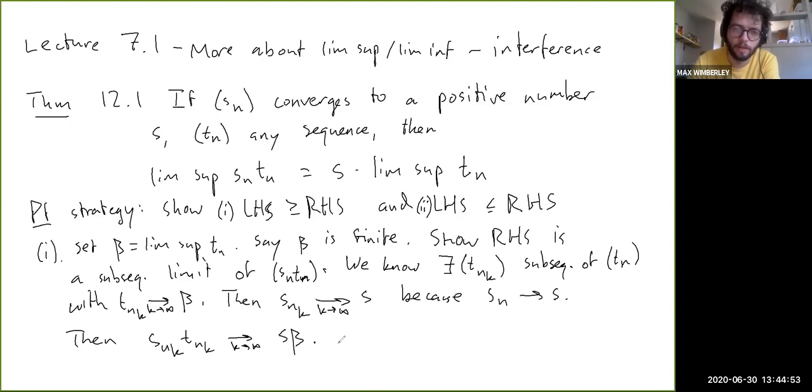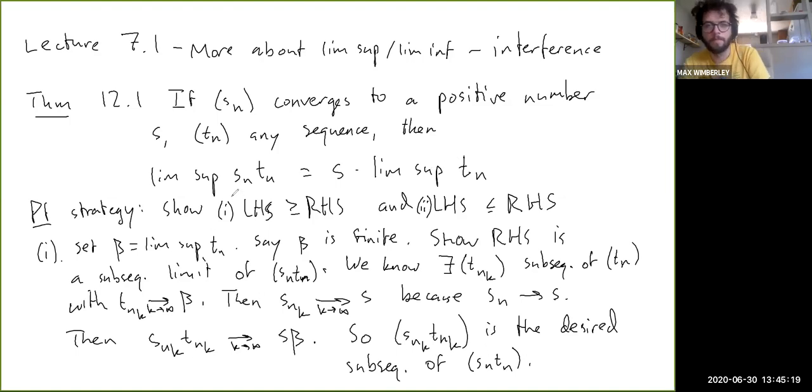And that's exactly what we wanted to show. S_nk T_nk is the desired subsequence of S_n T_n. So we found that S beta is a subsequential limit of S_n T_n, which is what we wanted. That shows that the left hand side is bigger than the right hand side when beta is finite. Now I'm going to erase this.